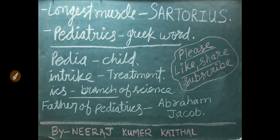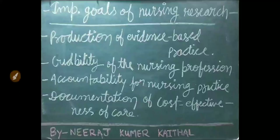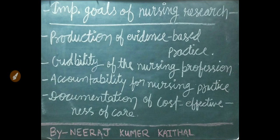The longest muscle of the human body is the sartorius. Pediatrics is a Greek word: 'pedia' means child, 'iatric' means treatment, 'ics' means branch of science. Father of pediatrics is Abraham Jacobi. Internal jugular vein is the most common site for central line catheterization. ECG timings: one small square equals 0.04 seconds, one large square equals 0.2 seconds, 25 small squares or 5 large squares equal one second. Diameter of placenta is 15 to 20 centimeters. Important goals of nursing research include production of evidence-based practice, credibility of the nursing profession, accountability of nursing practice, and documentation of cost effectiveness of care.